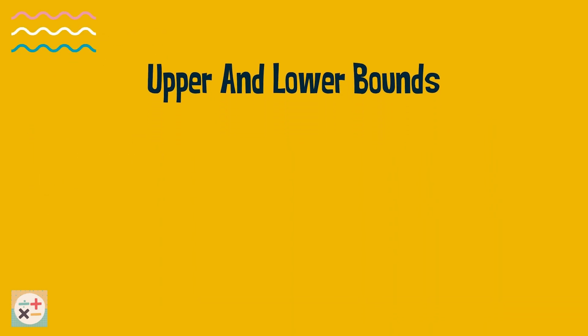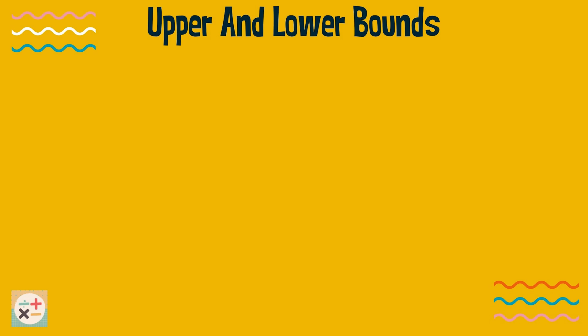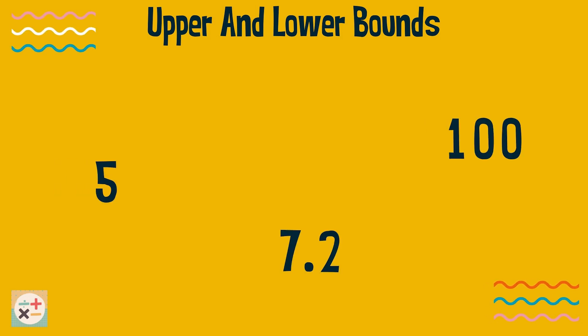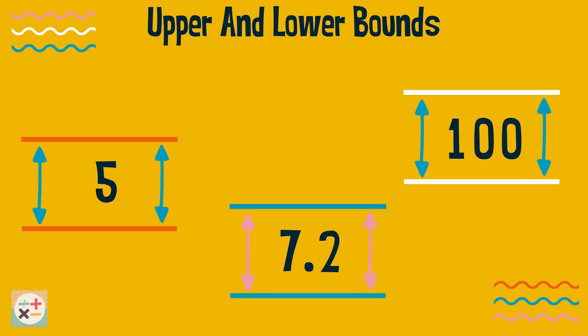Upper and lower bounds can be found when a number has been rounded. They provide the range that the actual value of the rounded number could fall within.